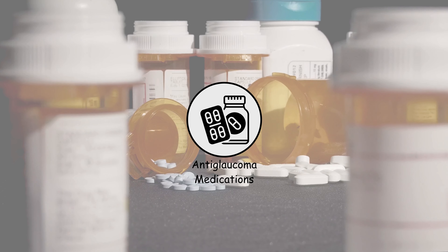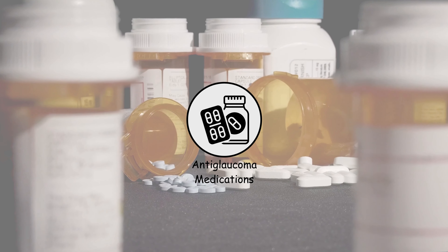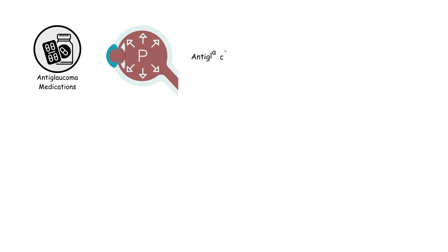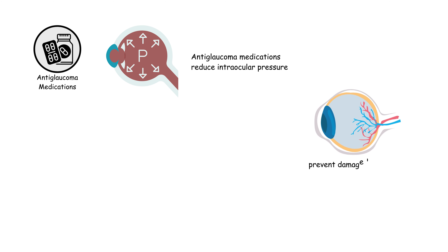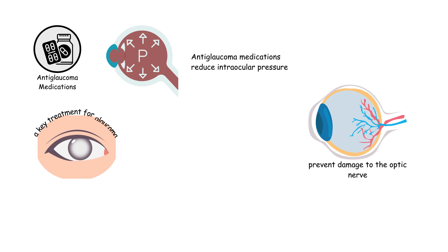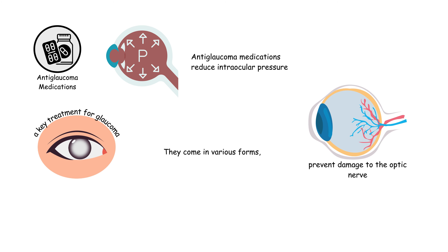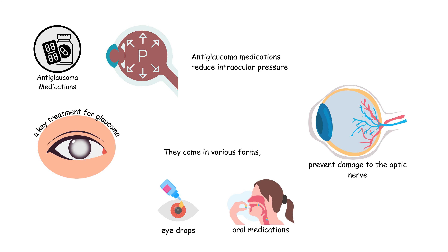Antiglaucoma medications reduce intraocular pressure to prevent damage to the optic nerve, a key treatment for glaucoma. They come in various forms, including eye drops and oral medications.